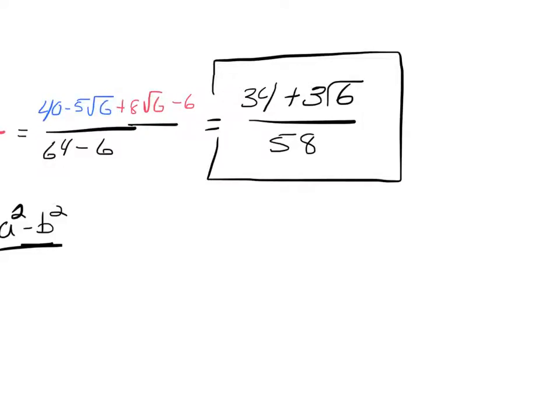But, for example, we can't cancel anything with this 58 and with this 34, even though we could divide them both by 2. And it's because of the addition here in the numerator. If we want to do any canceling, we have to factor the greatest common factor out of the numerator and cancel something in there with the denominator.